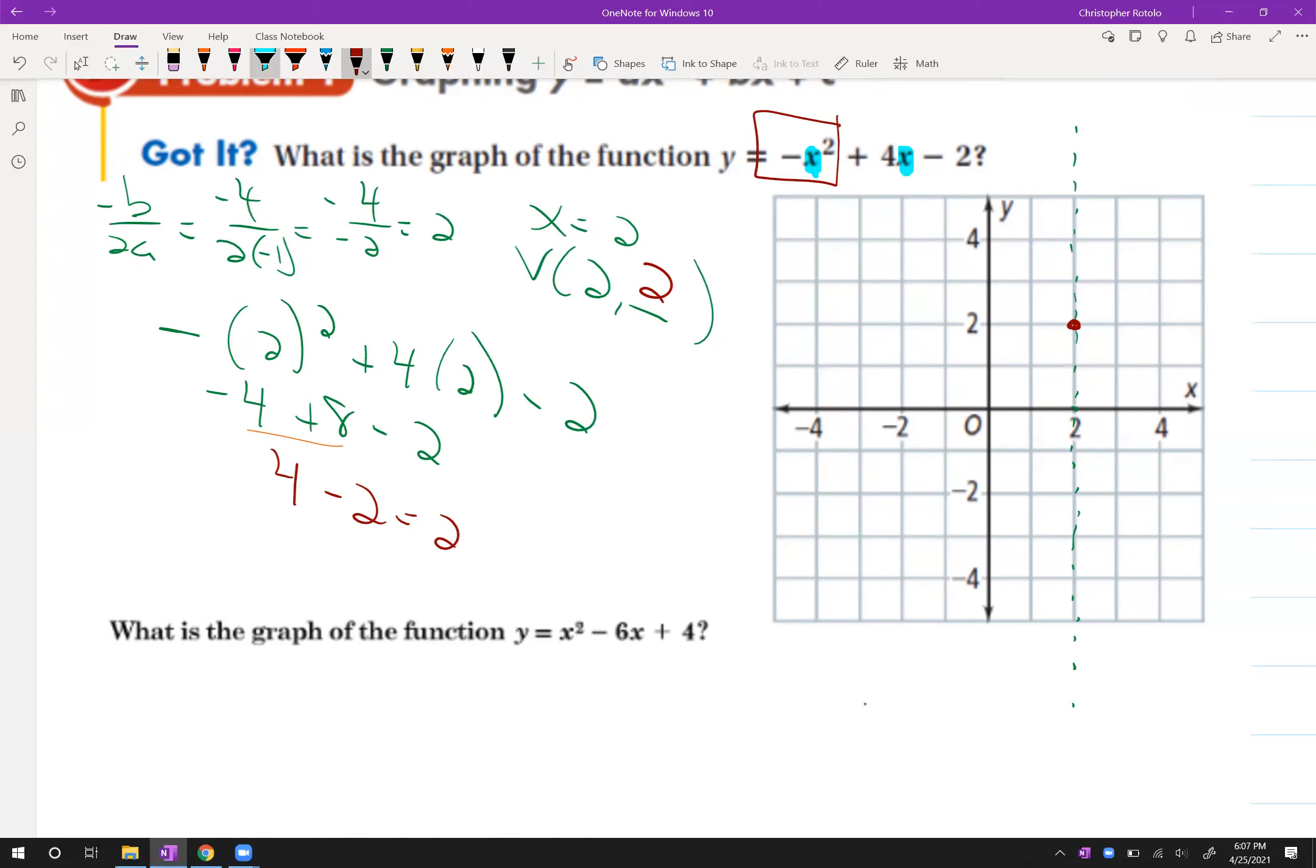I know that it should open down because A was negative 1. The other thing that I know based on all the vocabulary is that if I plug in 0, I'm going to get negative 2. So I can go to 0, negative 2. And if this is the axis of symmetry, if I go left 2, that's where that point is at, my y-intercept. So if I go right 2, I should have another point symmetric right there.